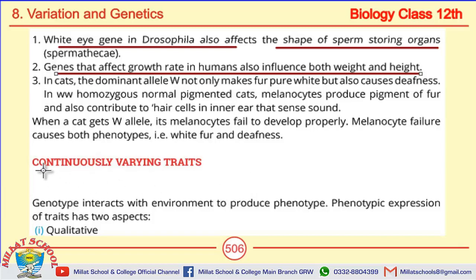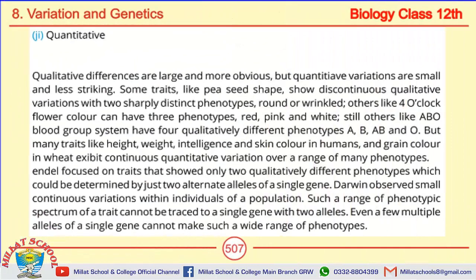Next are continuous and discontinuous variations. Continuously varying traits arise when genotypes interact with the environment to produce phenotypes. There are two types of phenotypic expression: qualitative and quantitative. Qualitative differences are large and more obvious, while quantitative variations are small and less striking. Qualitative variations are discontinuous.